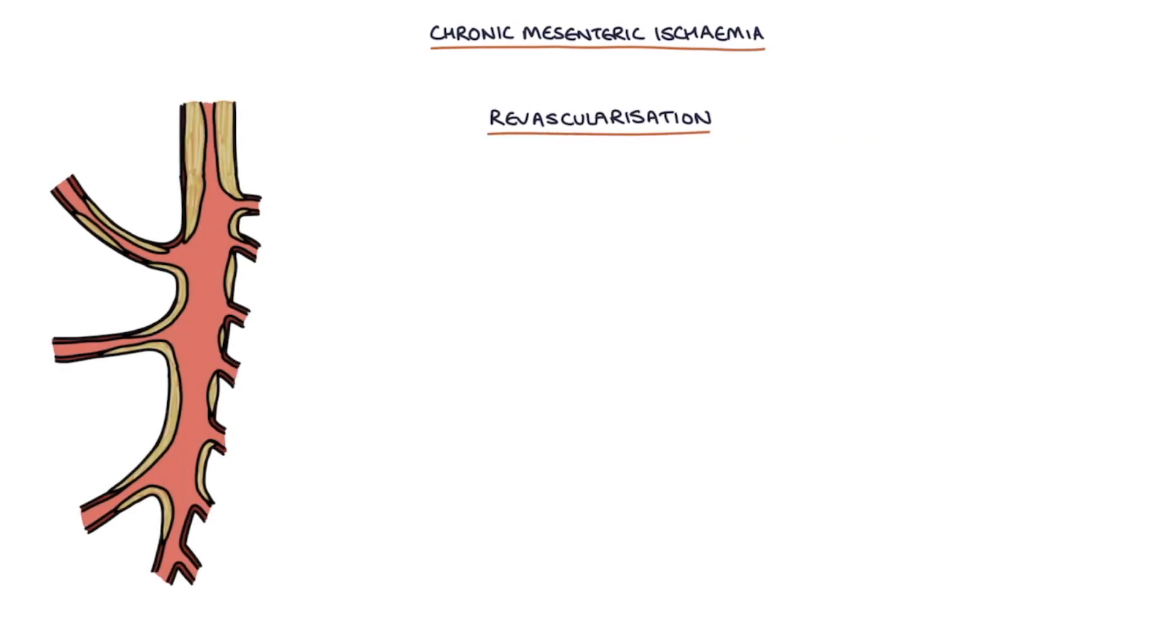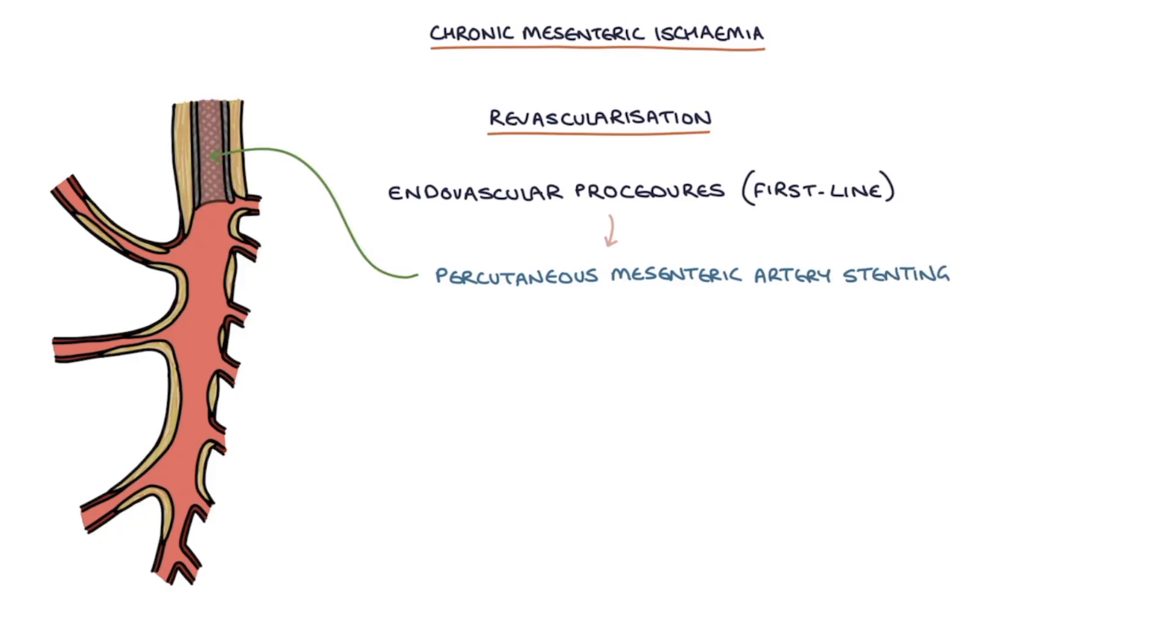Revascularization may be performed by endovascular procedures which are usually first line, for example percutaneous mesenteric artery stenting where a stent is inserted into the narrowed vessel or by open surgery which could involve endarterectomy or cleaning out the blood vessel, re-implantation of the blood vessel or bypass surgery.